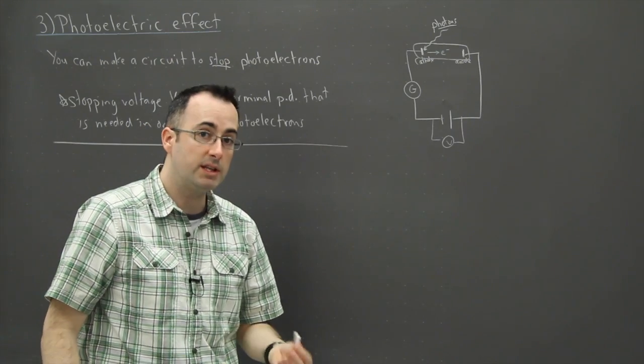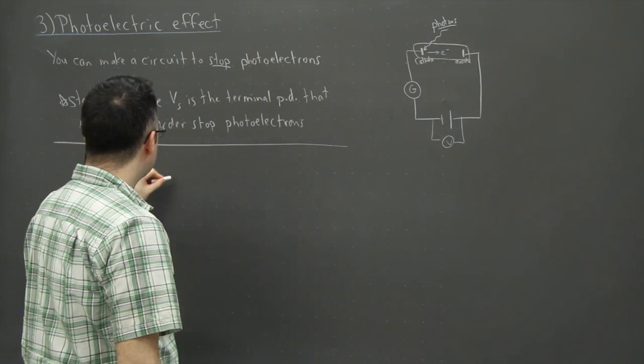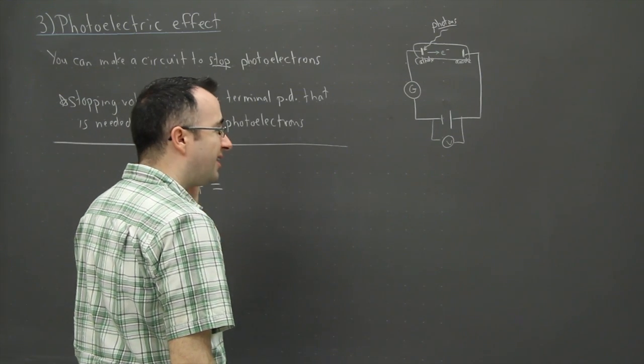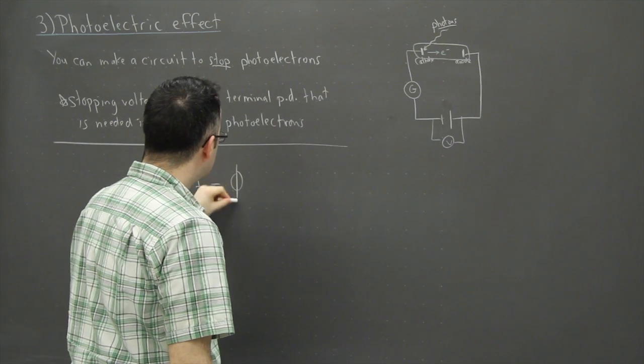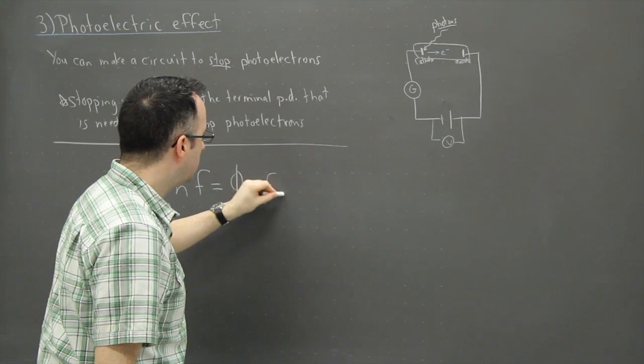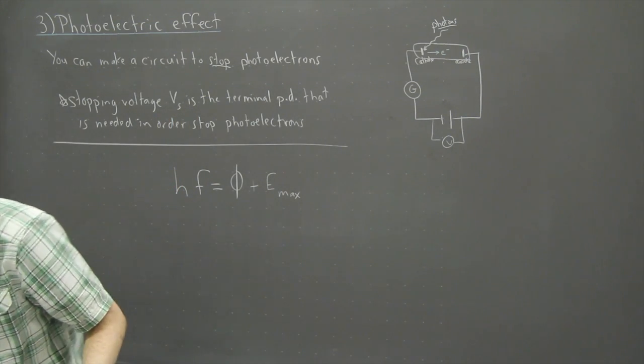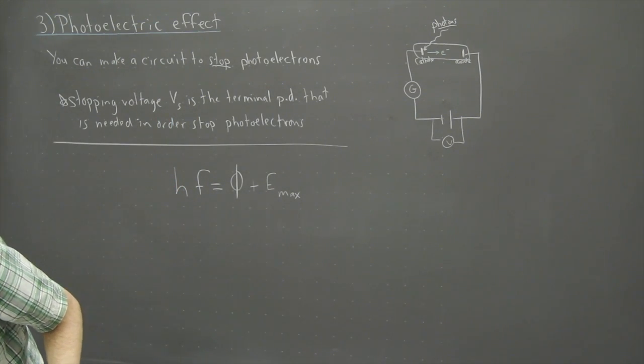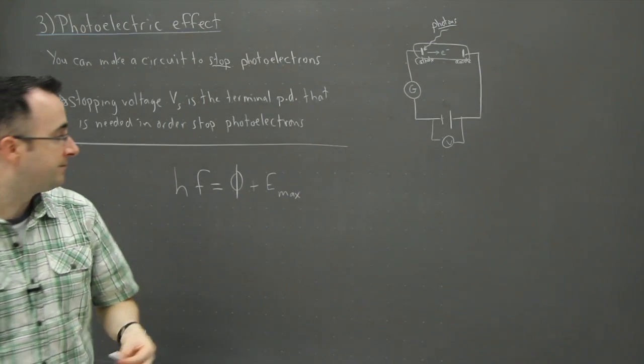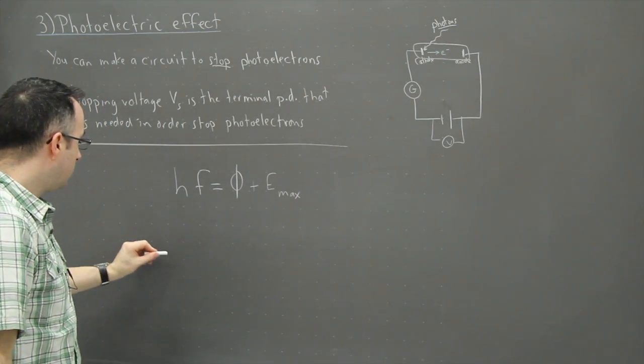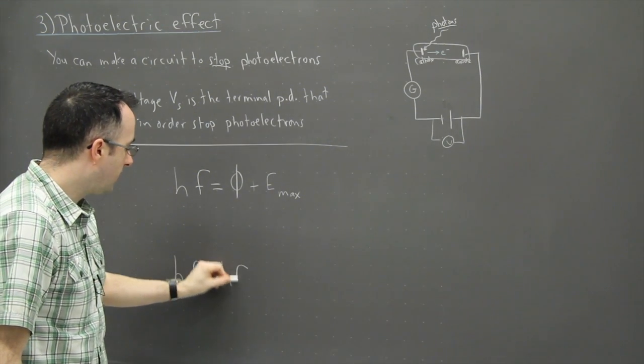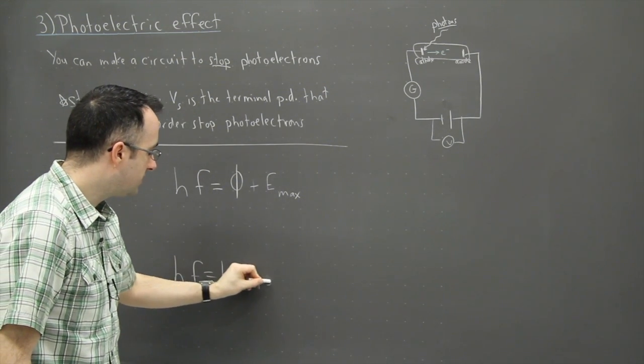So you can connect a circuit, you can set one up to where you do this. And now this brings me to be able to now explain these two equations that you get in your data booklet. They're so important and they're really easy to work with. The first equation goes: HF equals work function, which is this Φ, plus E_max. The other equation is HF equals HF_0 plus EV.